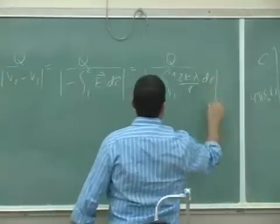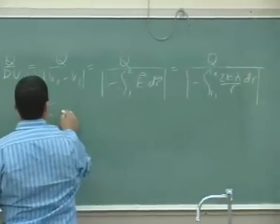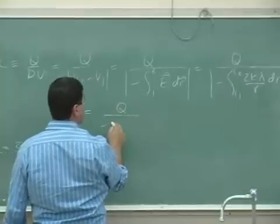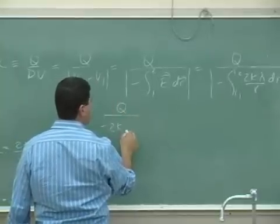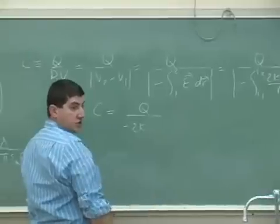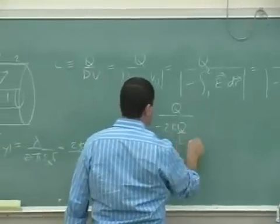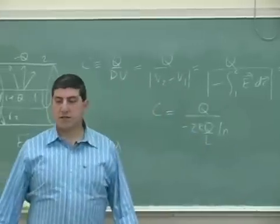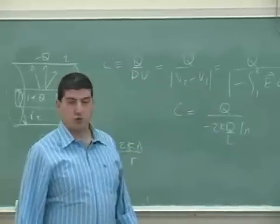It's going to be a natural log function. So negative 2kλ is going to be Q divided by its length L, and then it's going to be Ln of R2 over R1.